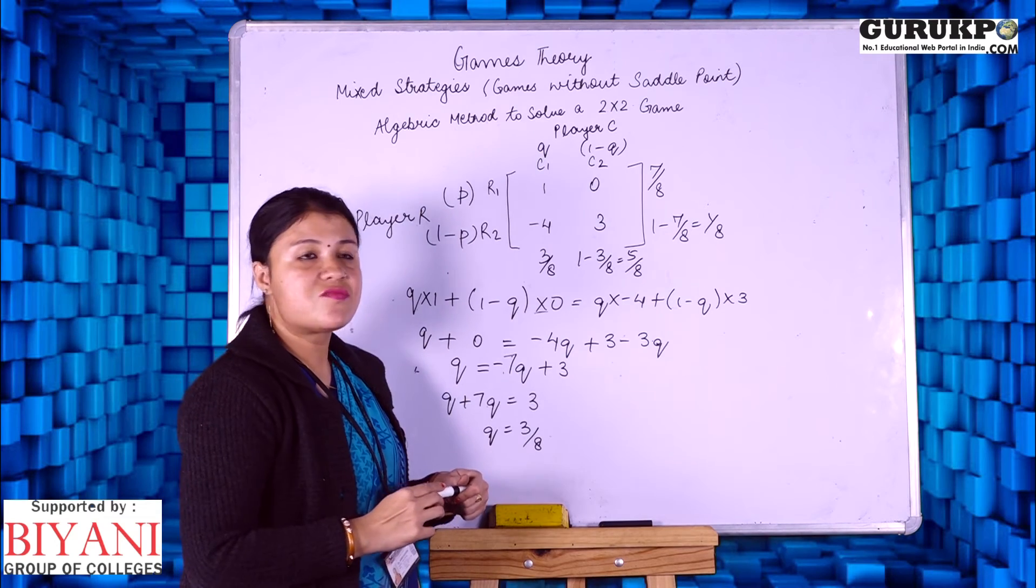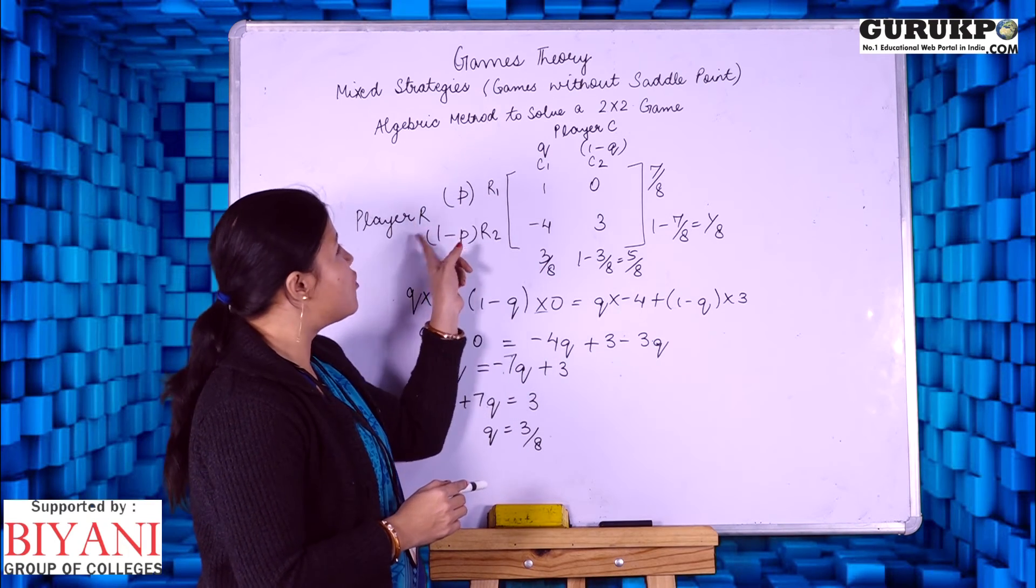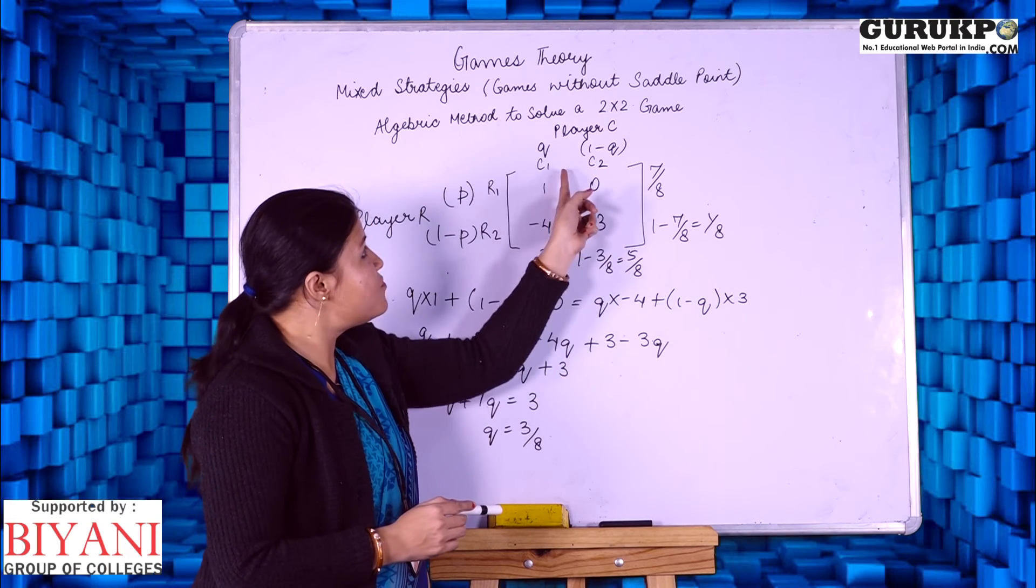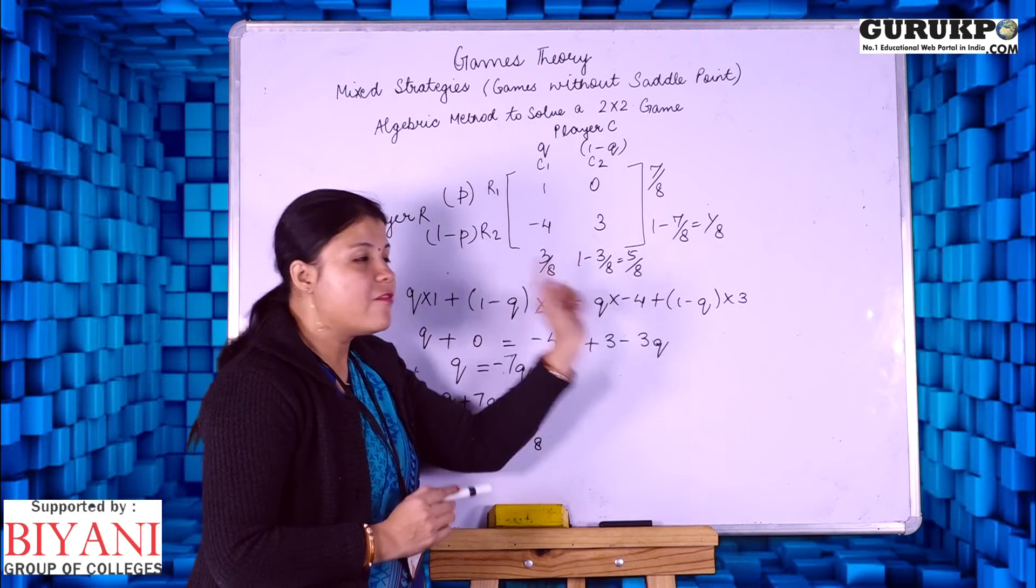We have arrived at the strategy of both the players. The strategy for R player is 7 by 8 and 1 by 8 and the strategy for column player is 3 by 8 and 5 by 8.